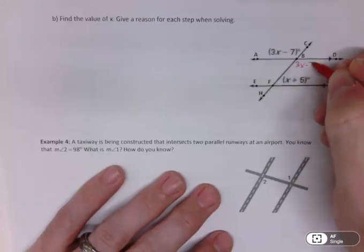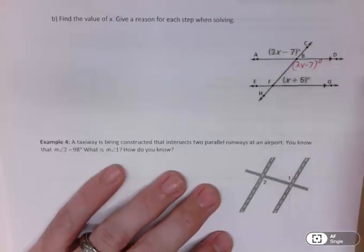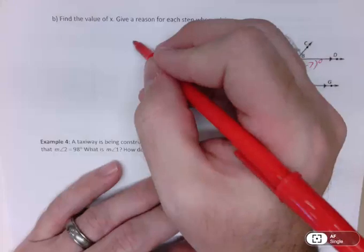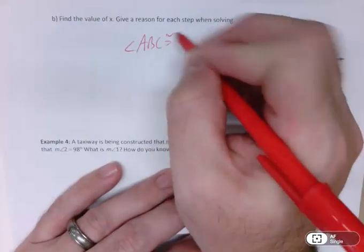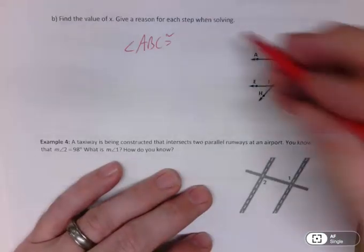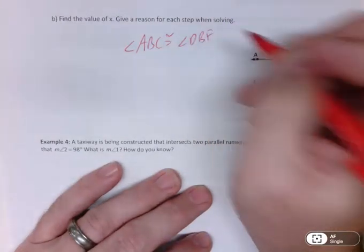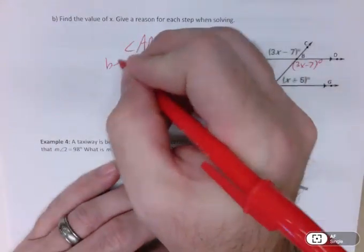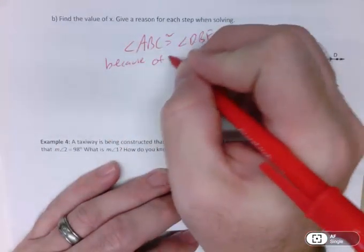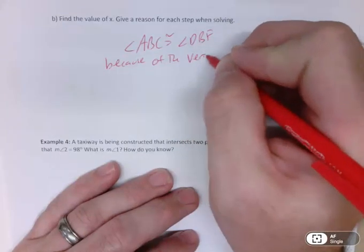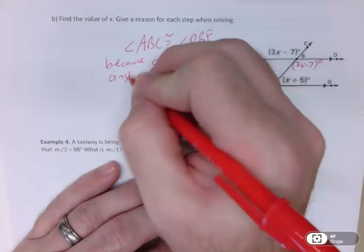So that's what I'm going to do. I'm going to move this one here and say that those two angles, angle ABC, is congruent to angle DBF, because of the vertical angles theorem.